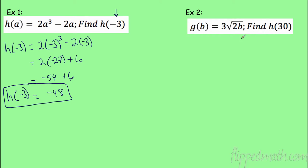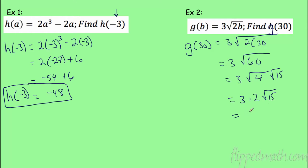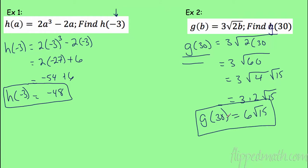Now we have a radical. Note: there's a typo — it should be g of b. So g(b) = 3√(2b). Find g(30): plug in 30, so g(30) = 3√(2 × 30) = 3√60. We need to simplify: 60 = 4 × 15, so √60 = √4 × √15 = 2√15. Then 3 × 2 = 6, so g(30) = 6√15. Always write the answer in function notation.